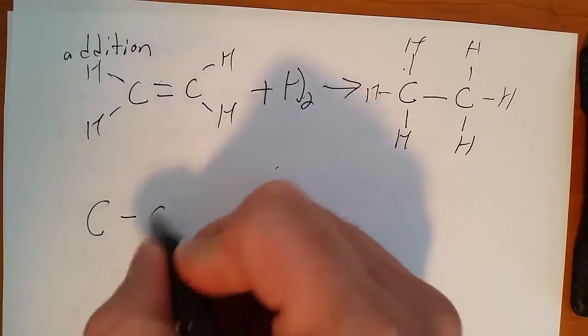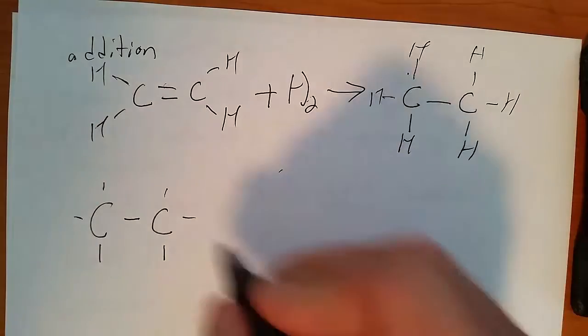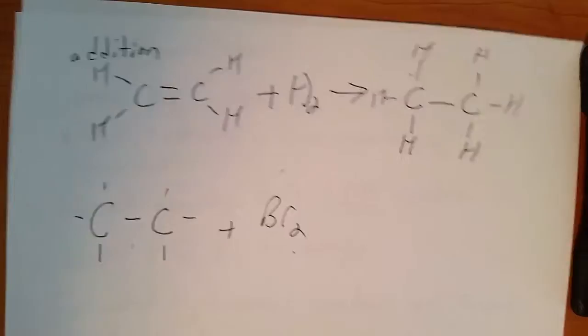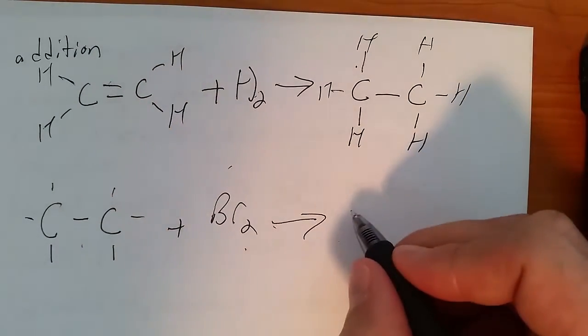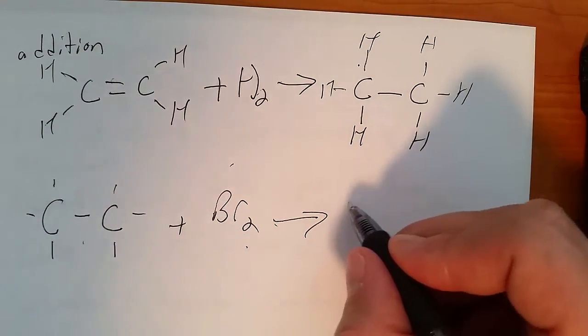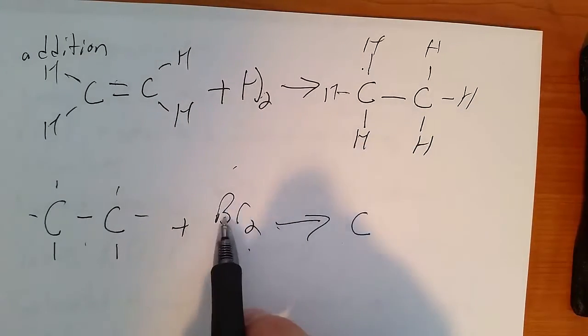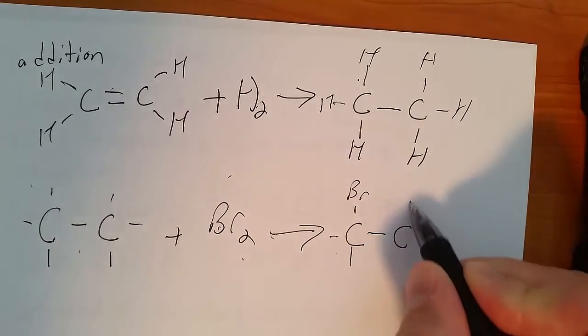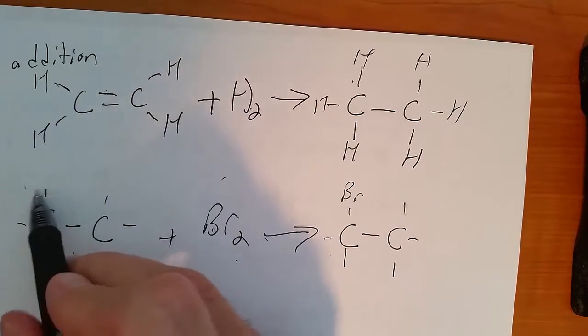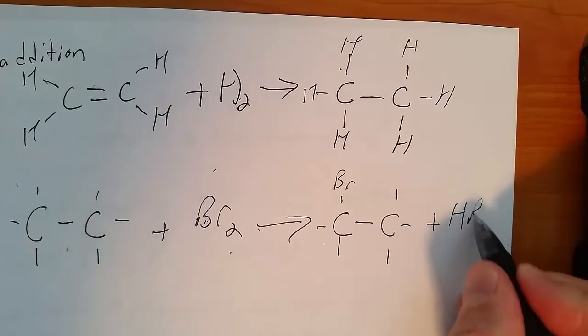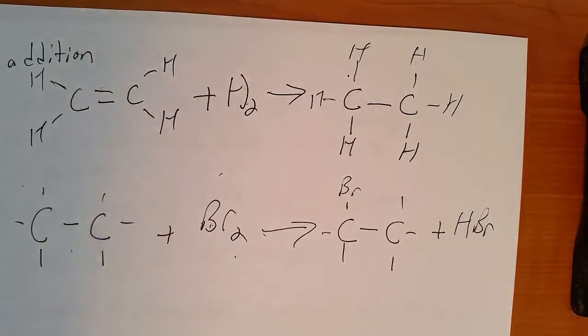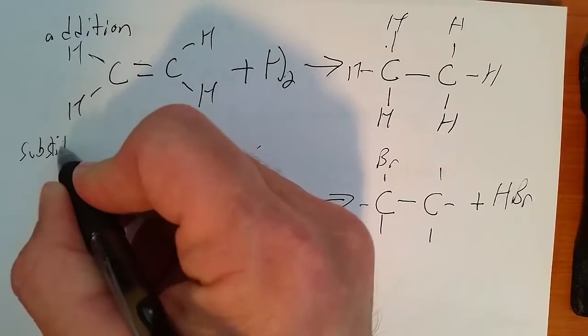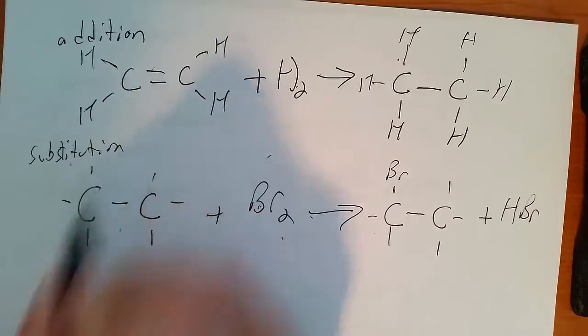Substitution, you have something that's already saturated. All right, so we're going to add bromine to this ethane, and we'll end up with bromoethane and hydrogen bromide. So we substitute a bromine for one of the hydrogens, and this hydrogen that got kicked out is going to bond with the bromine. That would be an example of substitution.